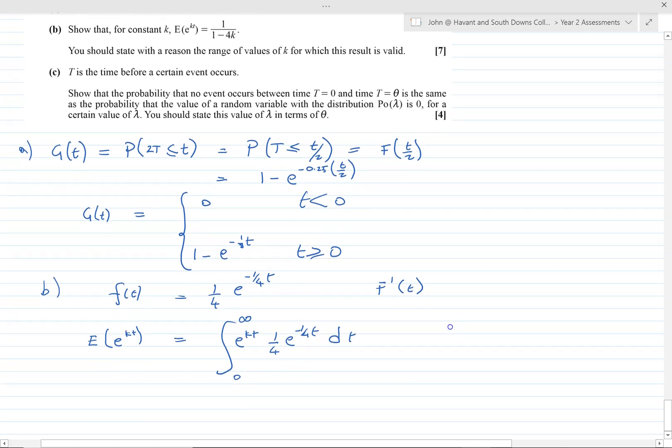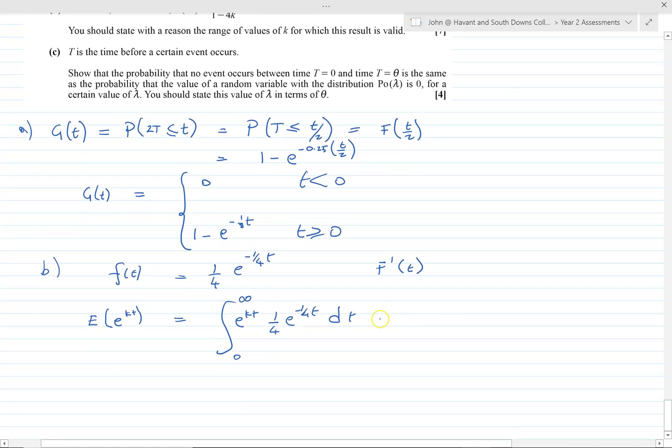We need to combine the exponentials. If you've got two exponentials together, it's the only way to go about it really. Infinity to naught. So combining using the rule of indices, we've got a quarter e to the (k minus a quarter)t.